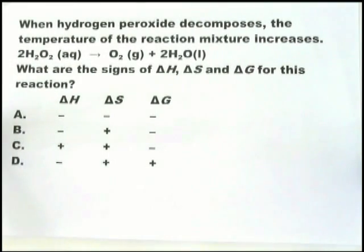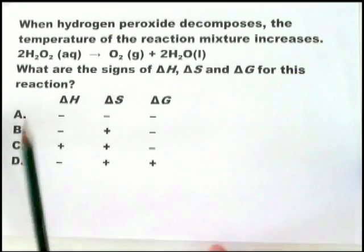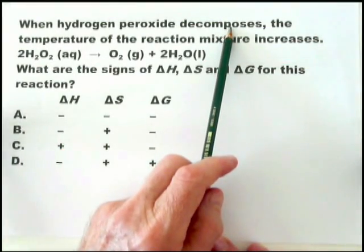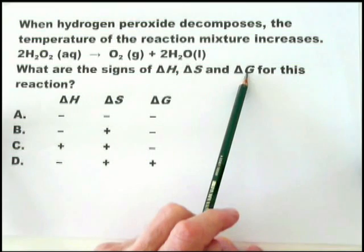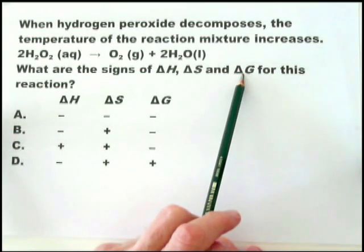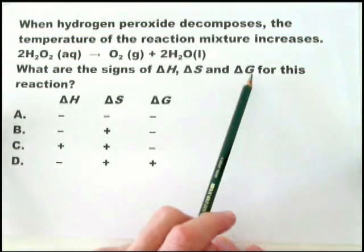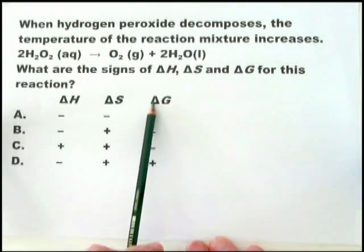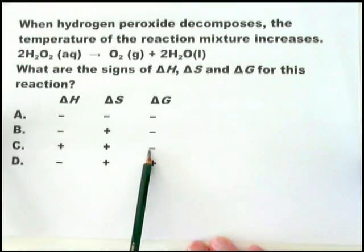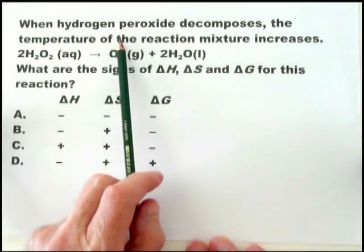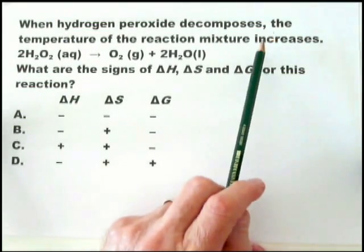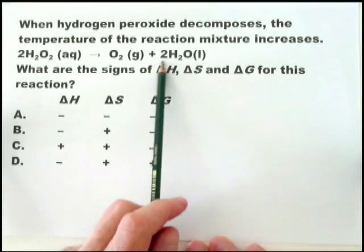In this question, the examiner is simply asking if you can understand the words in the question and determine the signs of delta H, delta S, and delta G from the words. First of all, when hydrogen peroxide decomposes, that means delta G must be negative because the reaction is going — it's a spontaneous reaction going to completion. So we're looking for delta G negative, which means it's one of A, B, or C. And then it says the temperature of the reaction mixture increases, so immediately we know that delta H is negative.